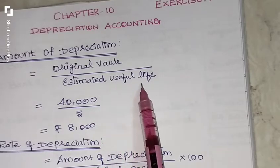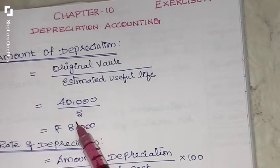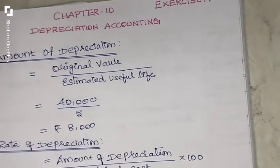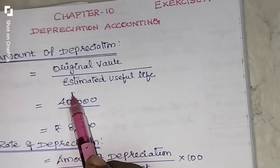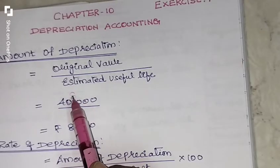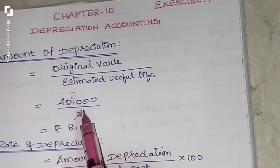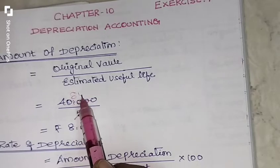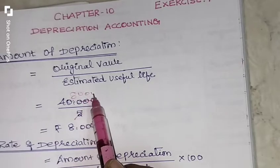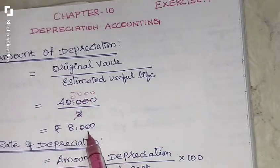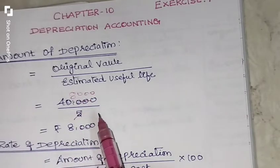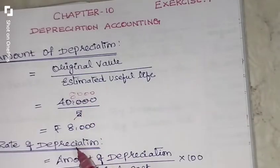The estimated useful life is 5 years. So now we calculate: 40,000 divided by 5. That gives us 8,000 rupees. The amount of depreciation is 8,000 rupees.